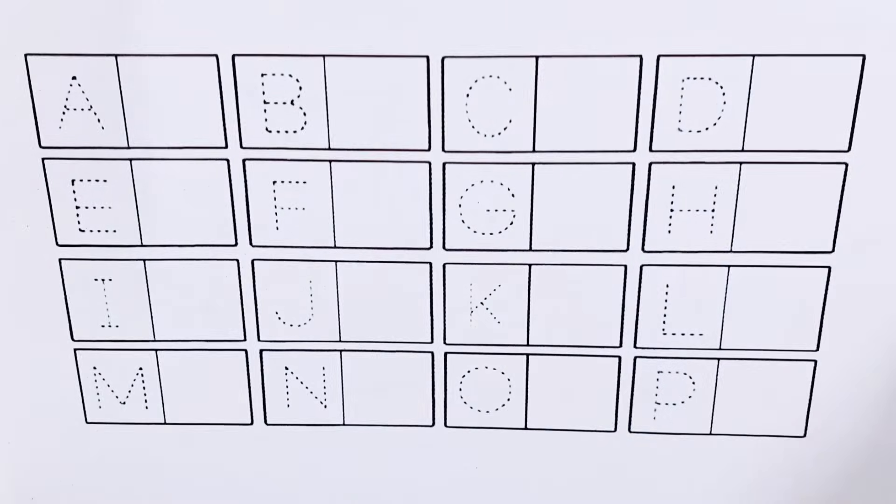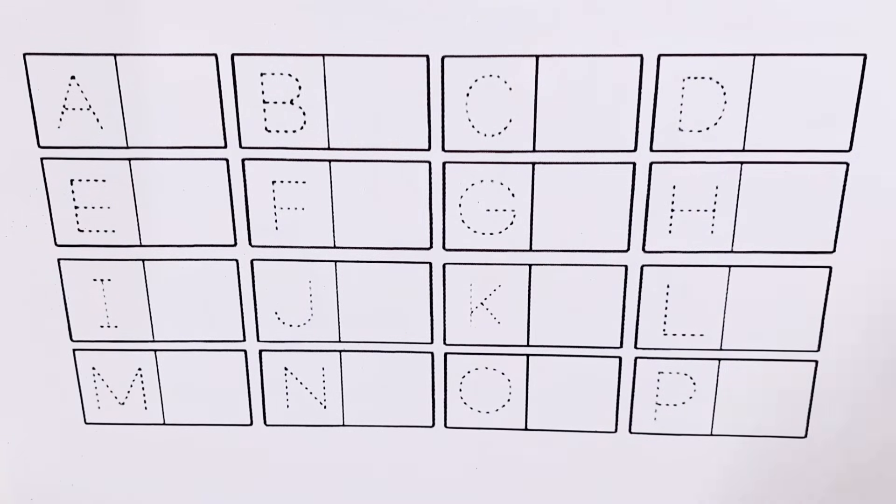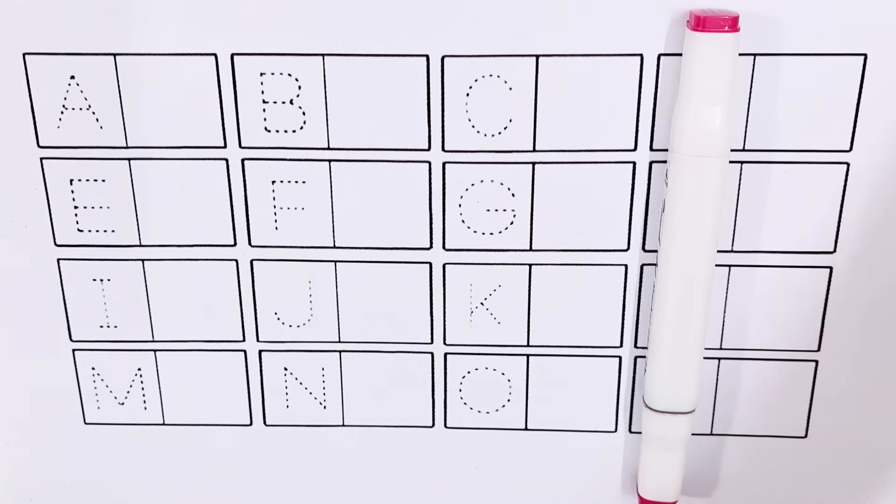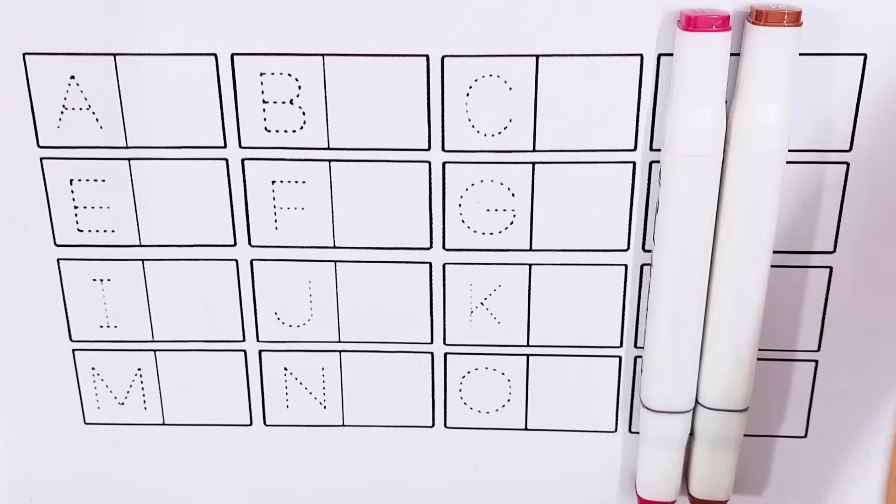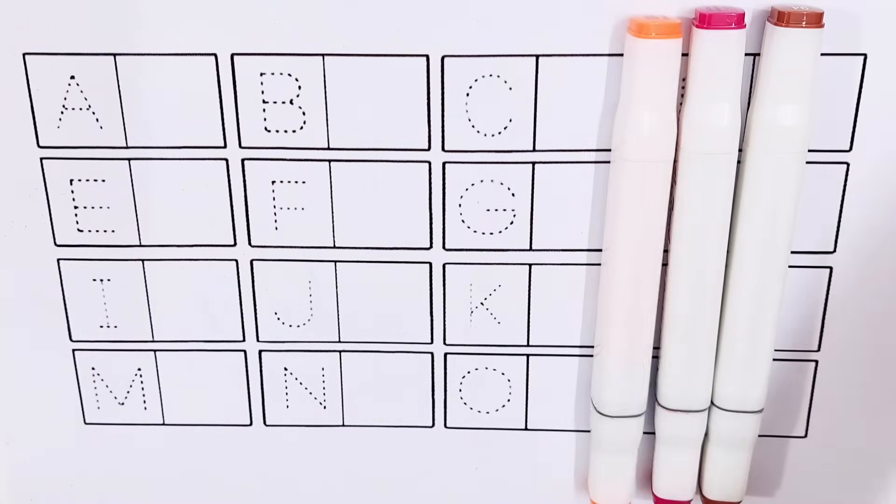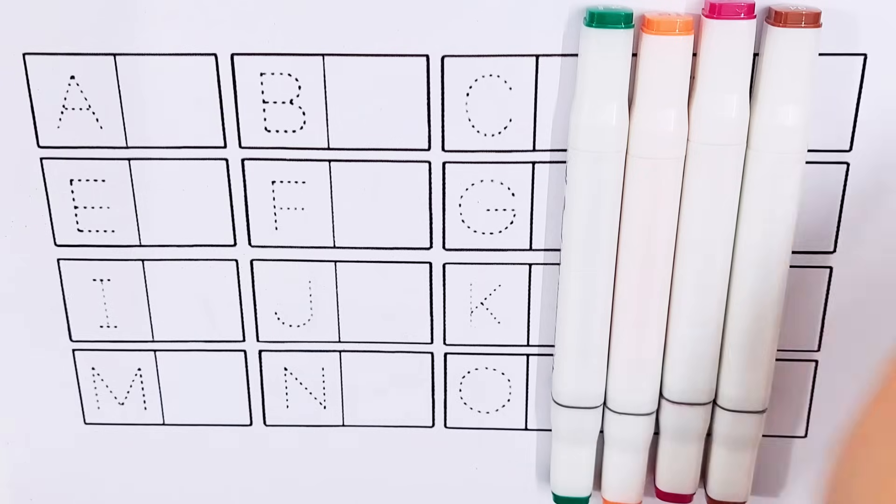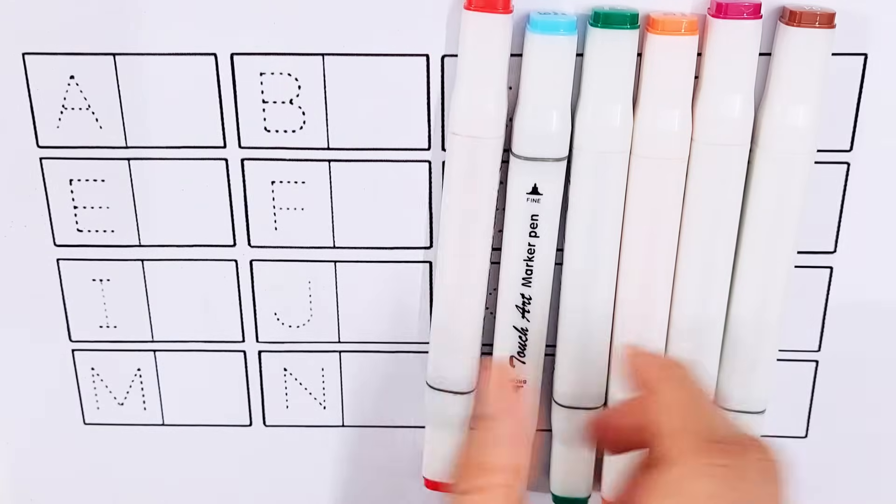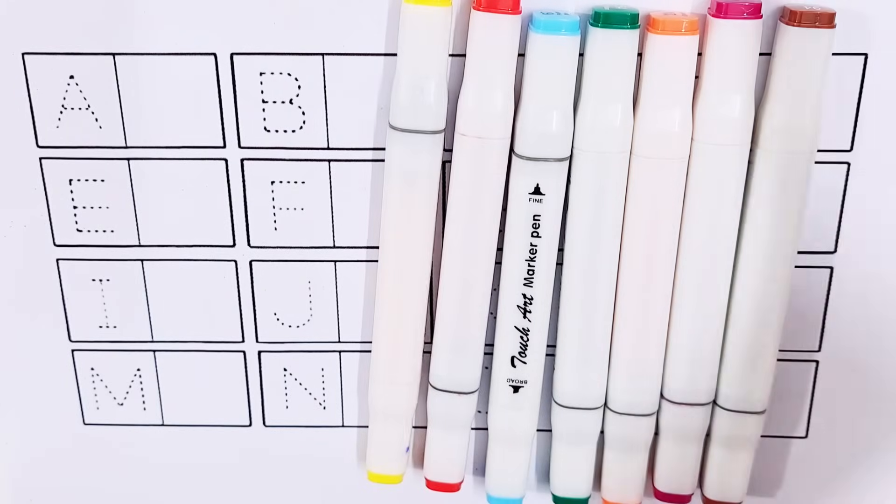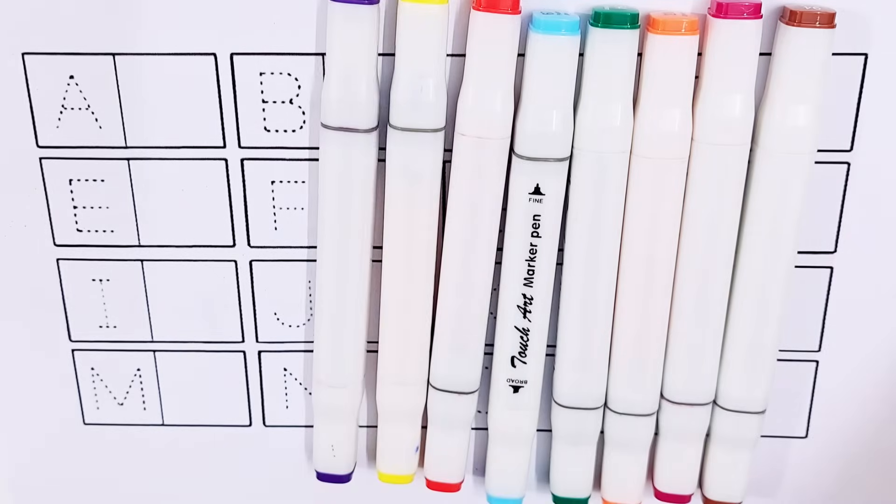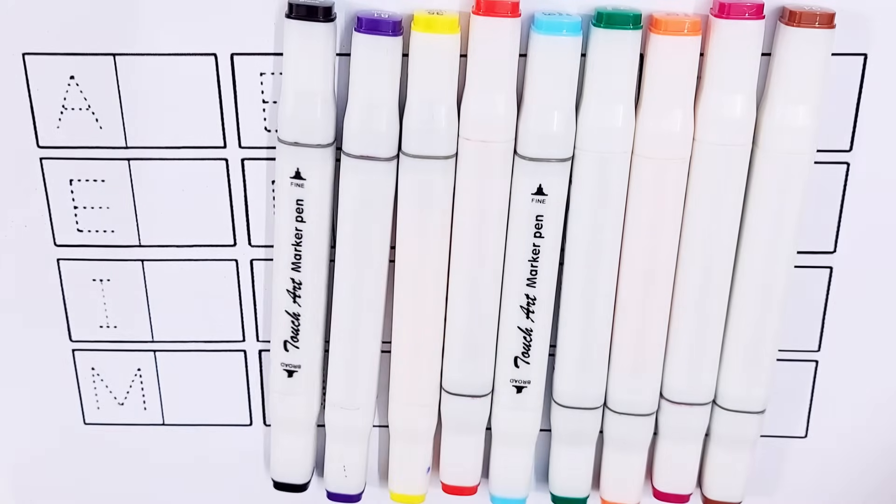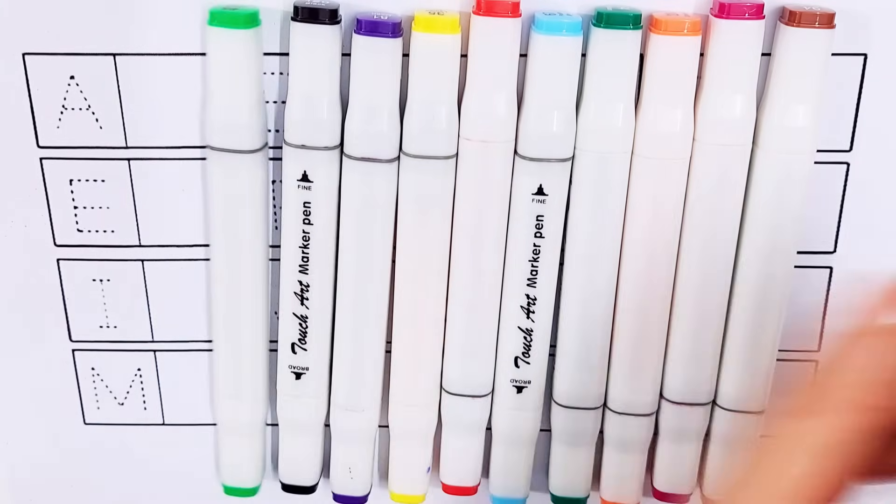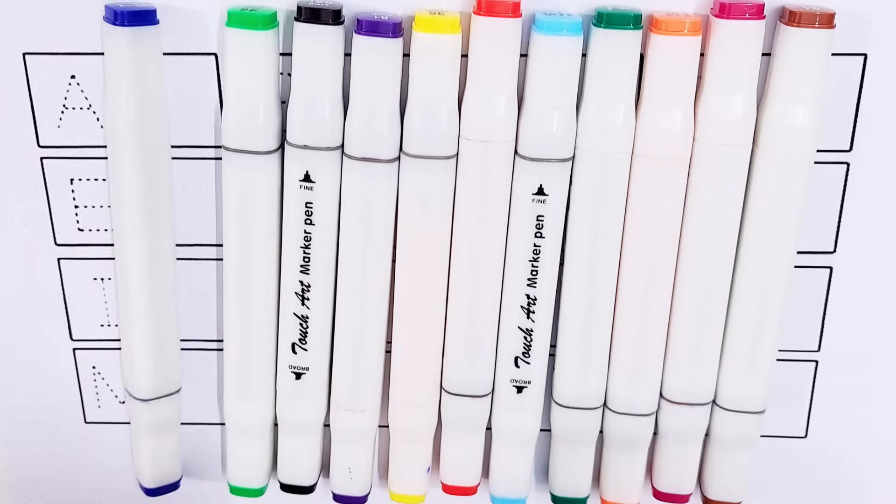Hello guys, let's learn some colors name: purple color, brown color, orange color, dark green color, sky blue color, red color, yellow color, violet color, black color, light green color, dark blue color.